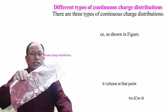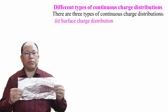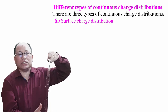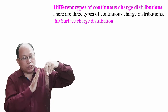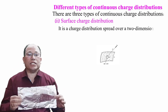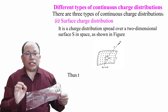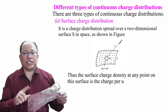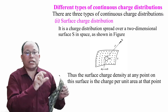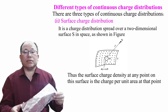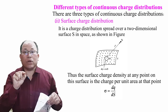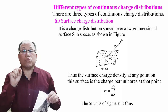The second type is surface charge distribution — charge spread over a two-dimensional surface, like a thin aluminum sheet. The surface charge density at any point is the charge per unit area, represented by σ. σ = Q/S, or σ = dQ/dS. The SI unit of σ is Coulomb per meter squared (C/m²).